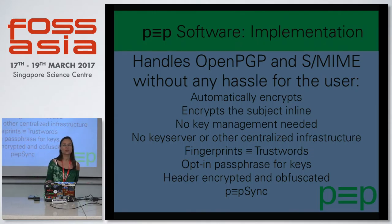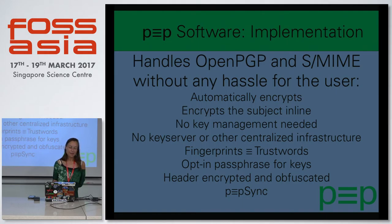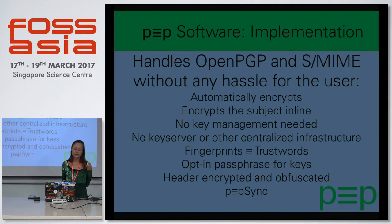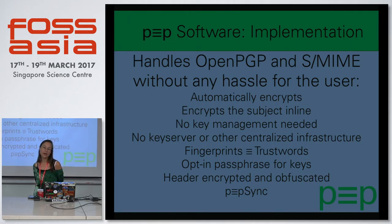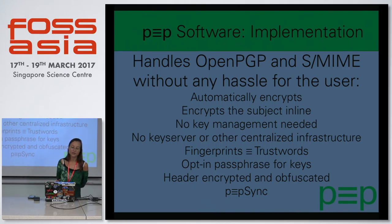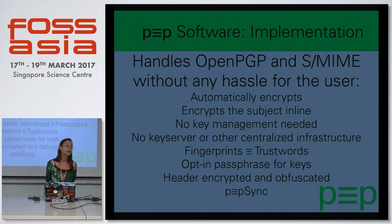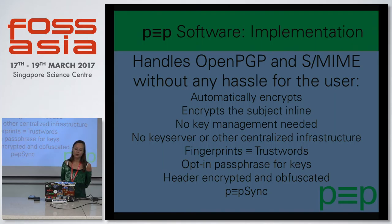Who was trying to use GPG and gave up on the way? So what PEP does: it automatically encrypts, it encrypts the subject line which usually is also not encrypted. You don't need to do key management anymore — it's done by the software. There is no key server or other centralized infrastructure. We transport fingerprints into trust words to make them easier to read aloud on the phone. There is an opt-in passphrase for keys. Ideally you just send out emails like normal — nothing changes, no passphrases to type, no key management. We also want to encrypt the header and obfuscate as much metadata as possible.